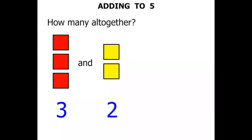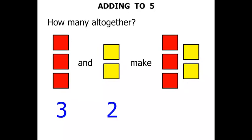Now how many altogether? 3 and 2 make... Let's bring them over and see how much they make together. We add them together. 1, 2, 3, 4, 5.